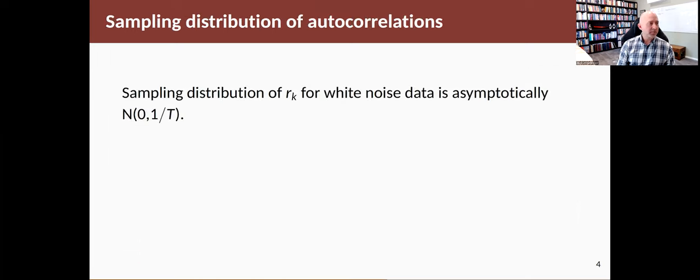Where do they come from? That comes from a little bit of mathematical theory around what the distribution is for the sample autocorrelation coefficient when you do have white noise data. This is an asymptotic result, so if you've got enough data,